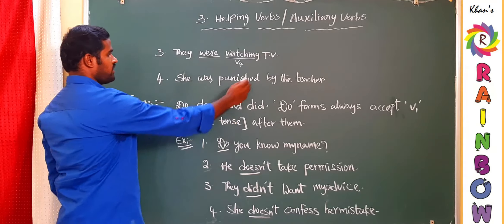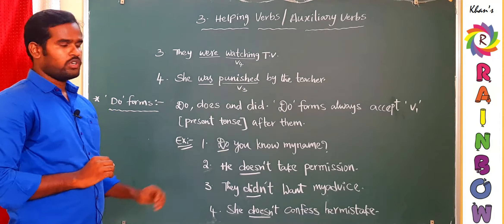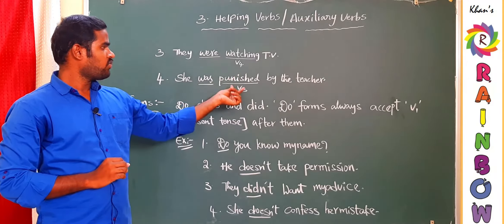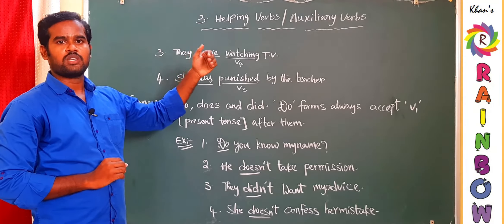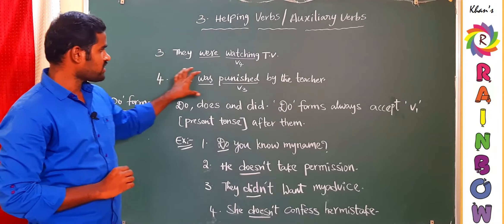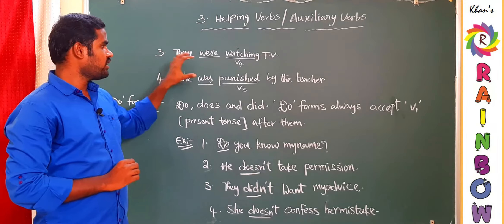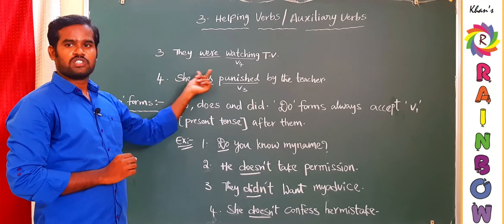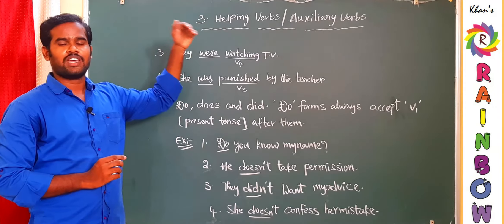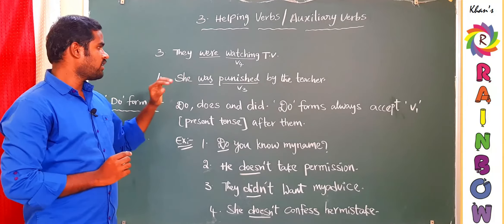The last example is 'She was punished by the teacher.' Here 'was' is the B-form, and 'punished' after it is V3 — not V2, because B-forms never accept V2. The teacher did the action, not the subject 'she,' so the statement is passive. Therefore V3 is used. To conclude: if the statement is active, use V4 after B-forms; if passive, use V3 after B-forms.